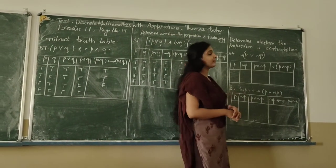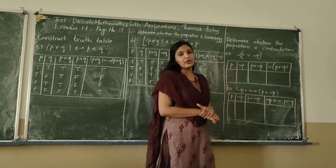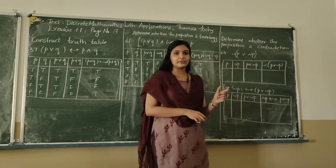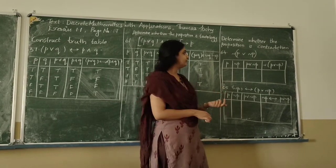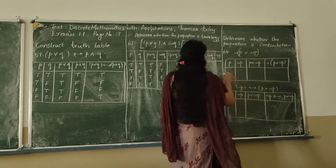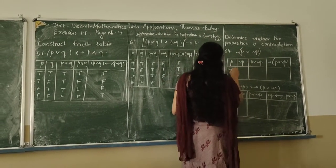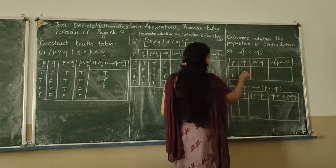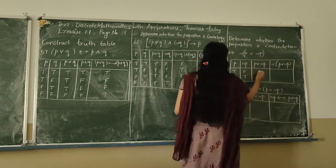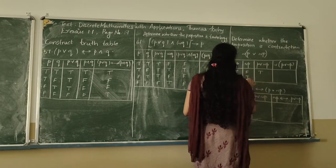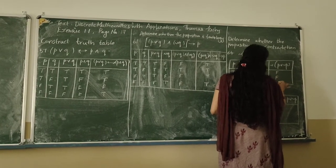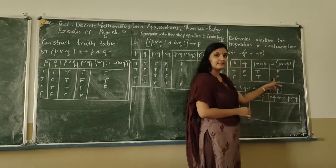The next question is: determine whether the proposition is a contradiction. A contradiction is a proposition which takes only false values — the truth value of the proposition always be false. The question is: negation of (P or negation Q). P can take both true and false values. Then P or negation Q gives: true or false = true, false or true = true. Then negation of this gives false, false. So it always takes false values, hence it is a contradiction.